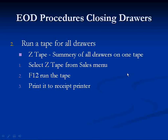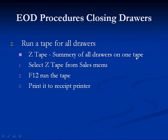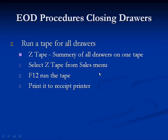Step number two: run a tape for all drawers. To do that, you'll want to run your Z-Tape. It's a summary of all drawers on one tape — it's what the bookkeeper or accountant needs to do the accounting. To run the Z-Tape, select Z-Tape from the Sales menu, click on F12 to run the tape, and then print it to the receipt printer.